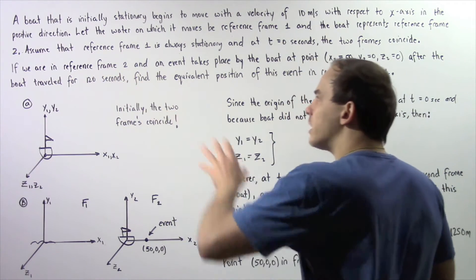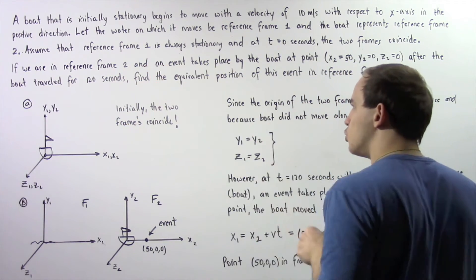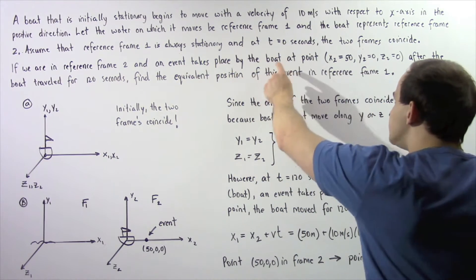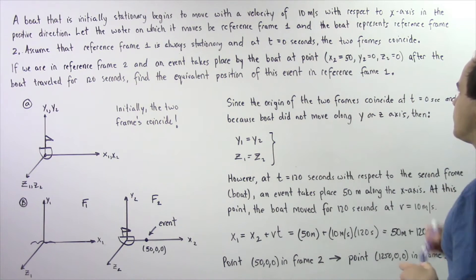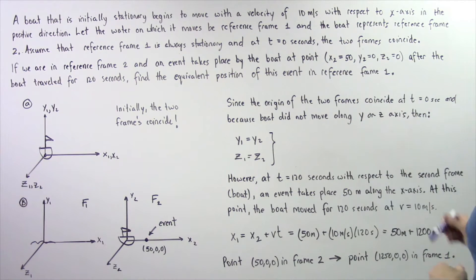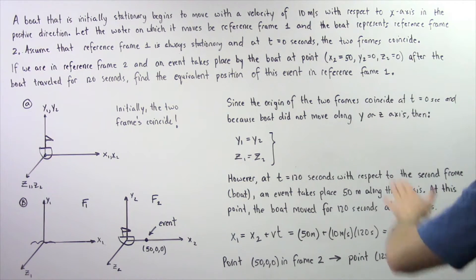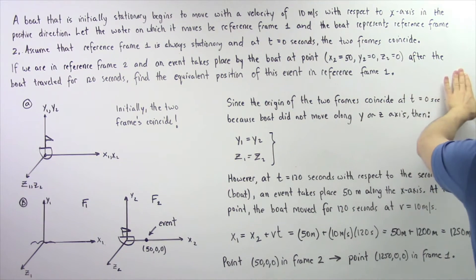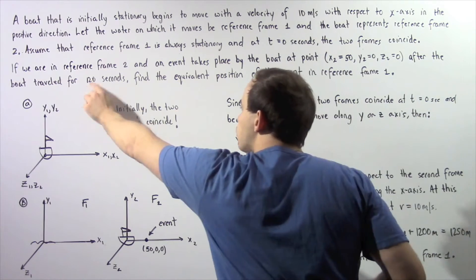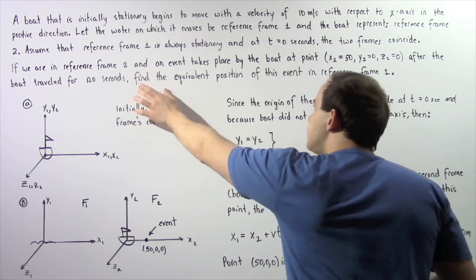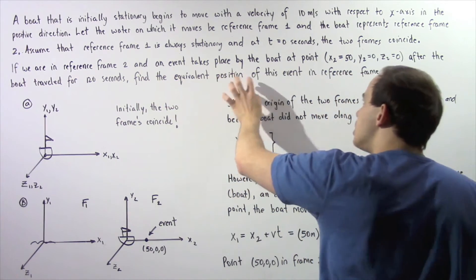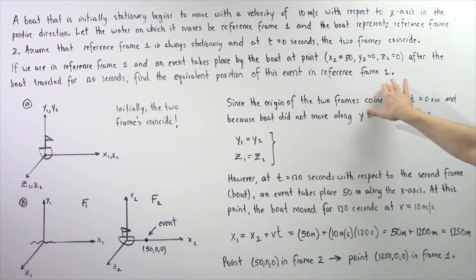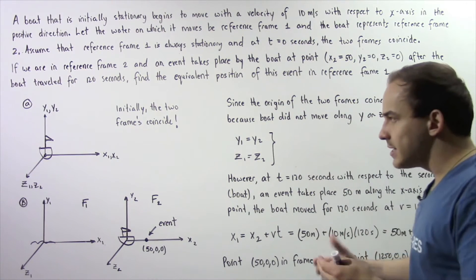If we are in reference frame number two and an event takes place by the boat at a position of x2 equals 50, y2 equals zero, and z2 equals zero — this is the coordinate point after the boat has traveled for 120 seconds — find the equivalent position of this same event with respect to reference frame number one.